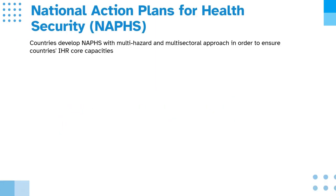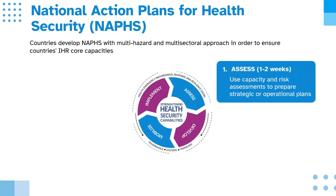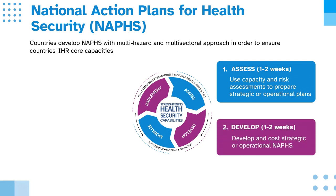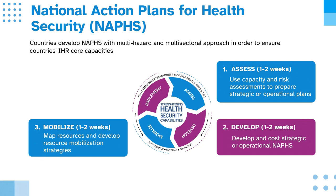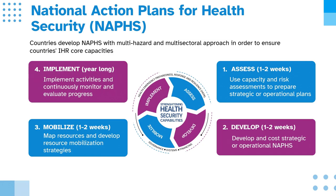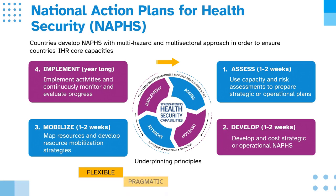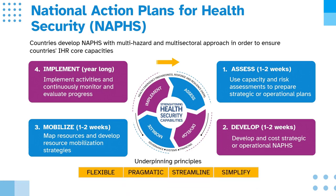Countries develop National Action Plans for Health Security, or NAPS, with multi-hazard and multi-sectoral approaches in order to ensure a country's IHR core capacities. Steps include: 1. Assess — use capacity and risk assessments to prepare strategic or operational plans. 2. Develop — develop and cost strategic or operational NAPS. 3. Mobilise — map resources and develop resource mobilisation strategies. 4. Implement — implement activities and continuously monitor and evaluate progress. Underpinning principles are: flexible, pragmatic, streamlined, simplified, health multi-sectoral, and whole-of-society approach.